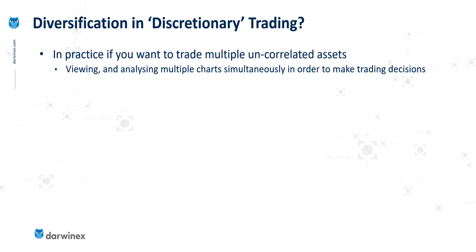If you're a discretionary trader who looks at charts and performs analysis manually on each of those charts, then clearly you're going to have to be able to do that on multiple charts simultaneously. So for example, if you were trading three assets, then that's three charts that you need to be monitoring and making decisions about.